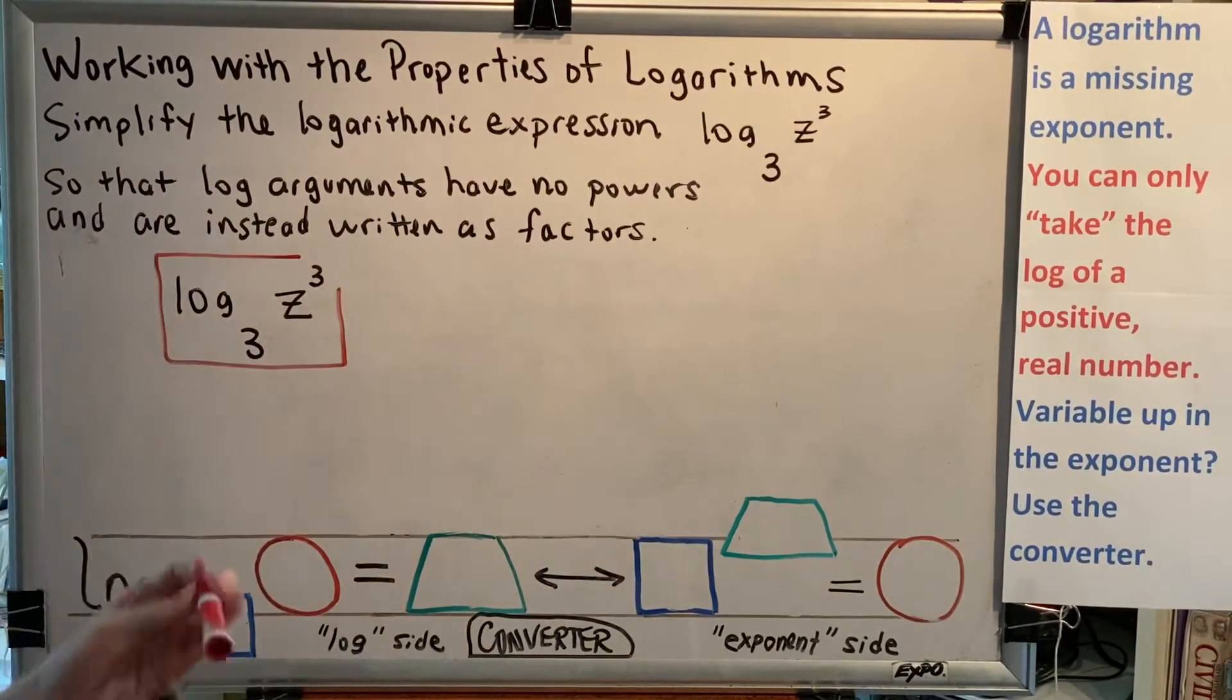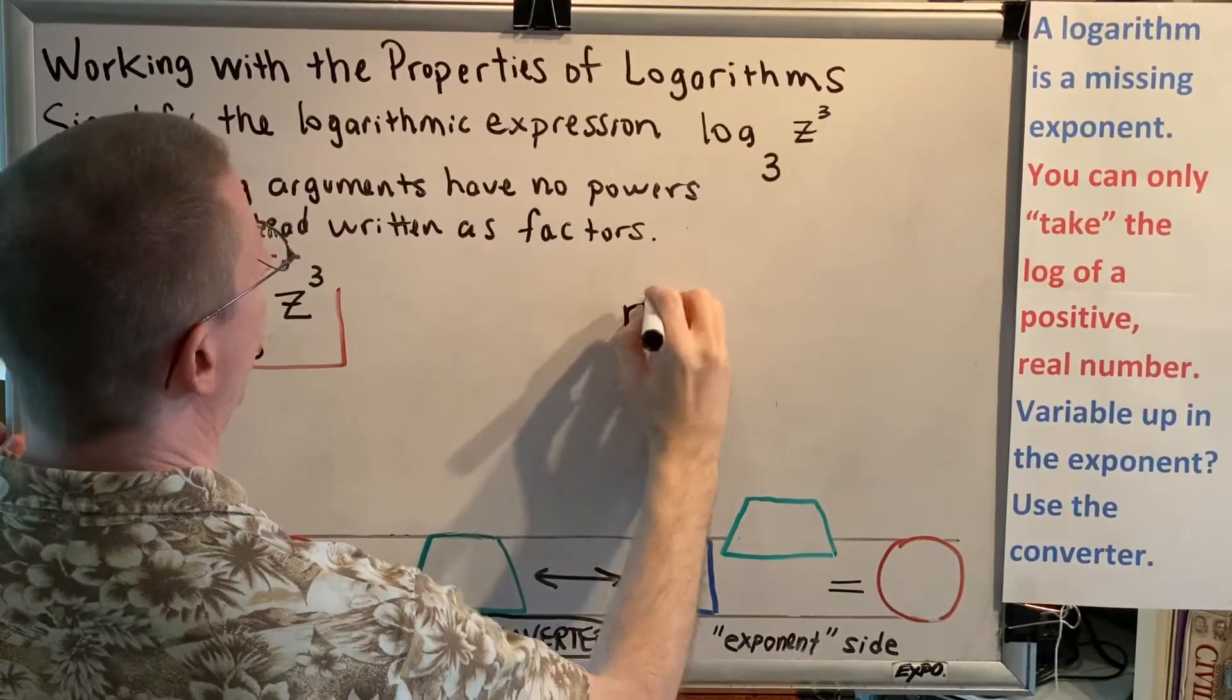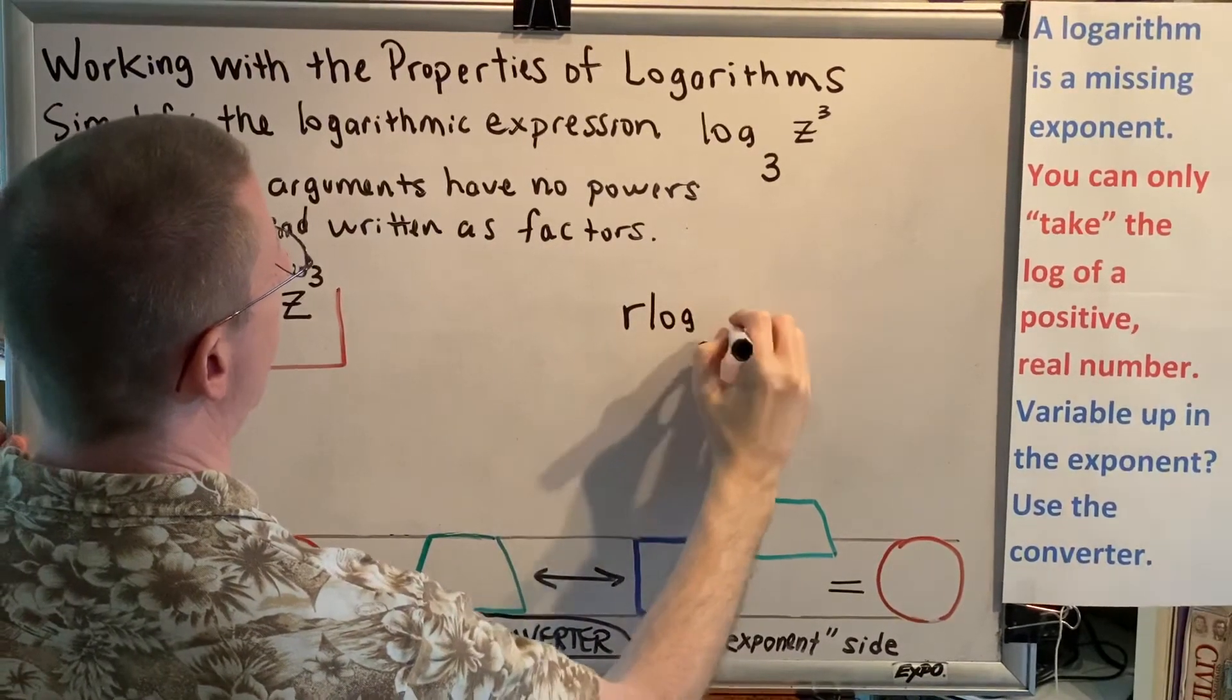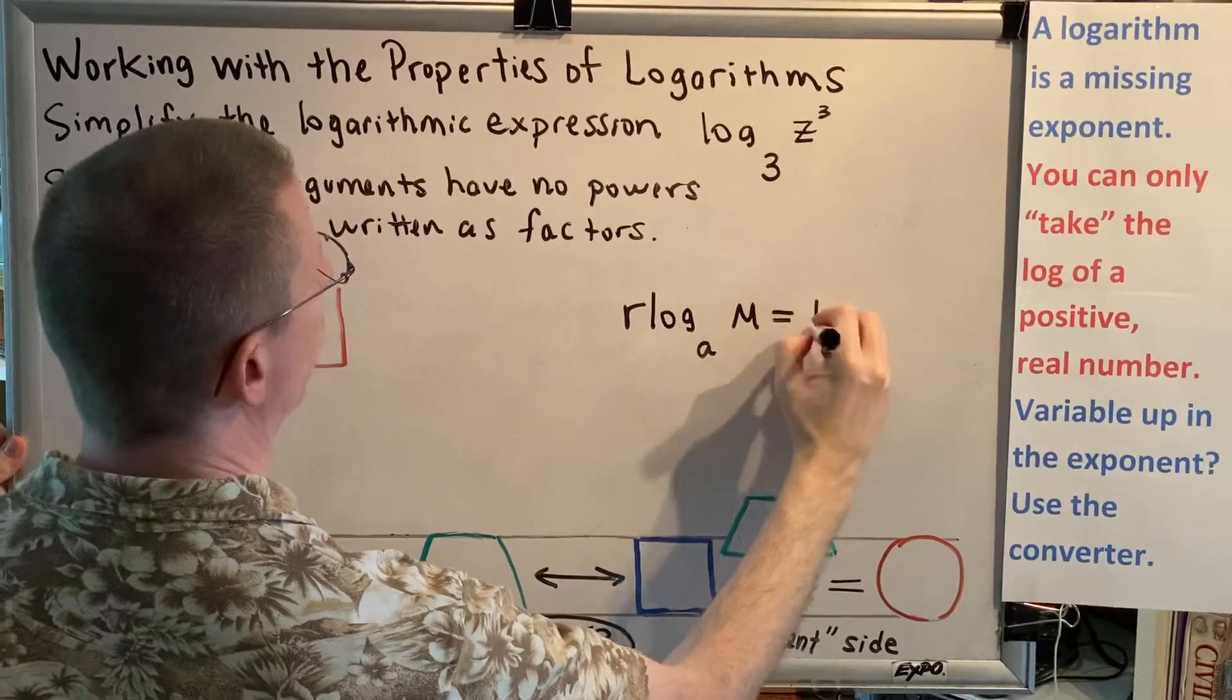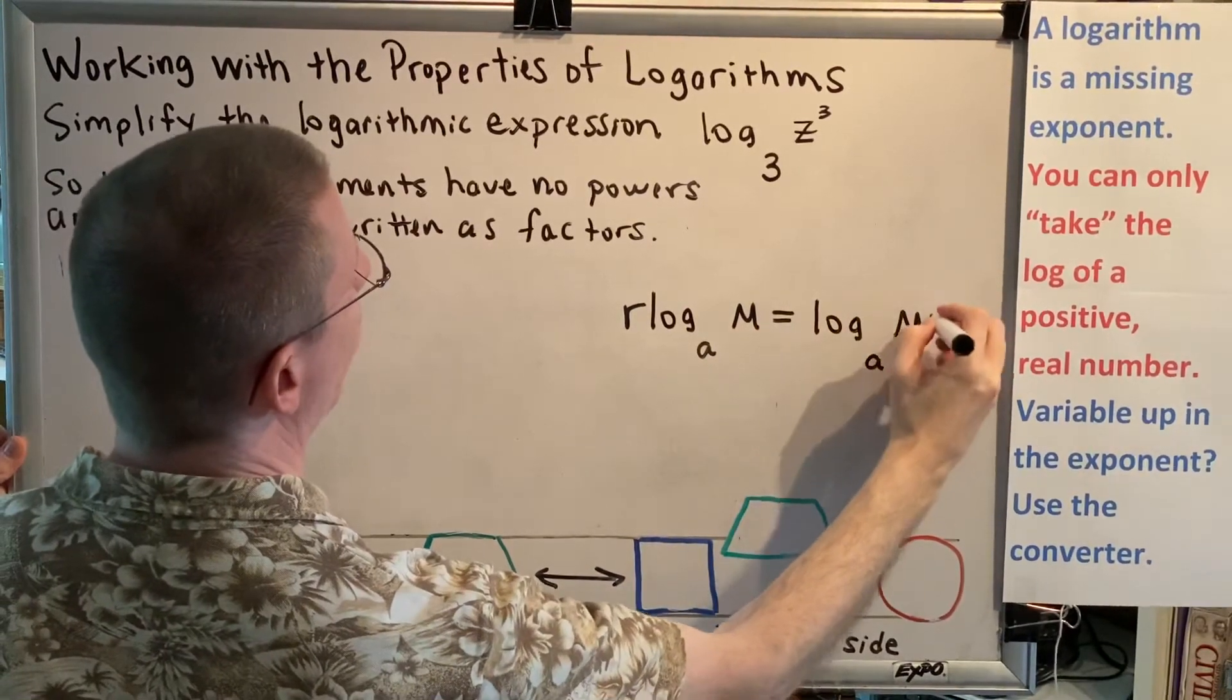Rule 9 allows us to do that. Rule 9 says r log base a of m equals log base a of m to the r power.